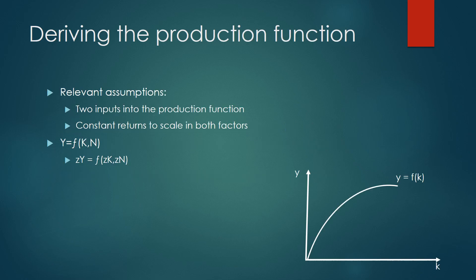Okay so we want to derive the production function and again we're going to be using the assumptions and I've just written out here the two major assumptions that we'll be using. The first one is that there are two inputs into the production function, those two inputs being capital and labor, and then we'll be looking at the constant returns to scale on both of those factors.